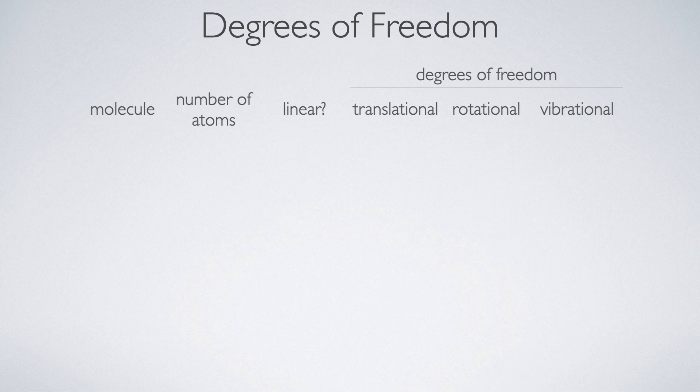So just to summarize some of that, if I take an atomic molecule, an atom, neon has one atom and it has its 3 translational degrees of freedom. Nitrogen, a diatomic gas, is linear. It has 3 translational, 2 rotational, 1 vibrational degree of freedom.